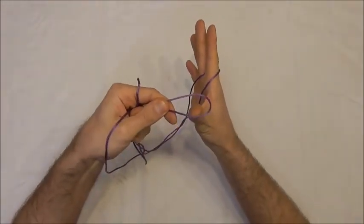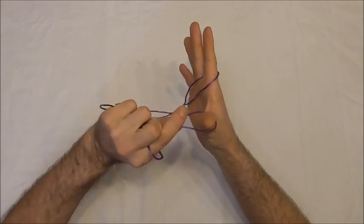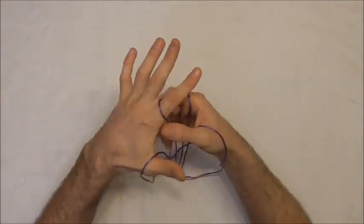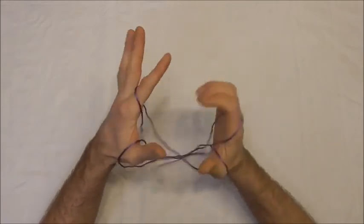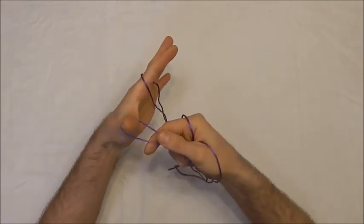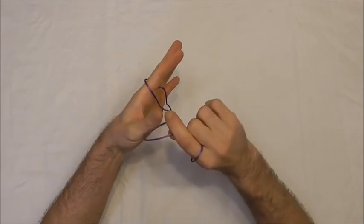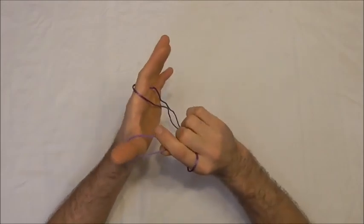Same with the thumb, take it off the thumb, half twist towards, place it back on the thumb. And the same over the other side. Take the loop off, half twist towards and then put it back on.